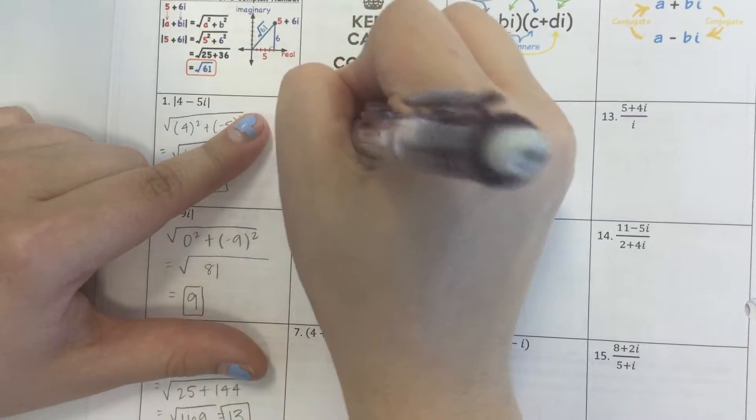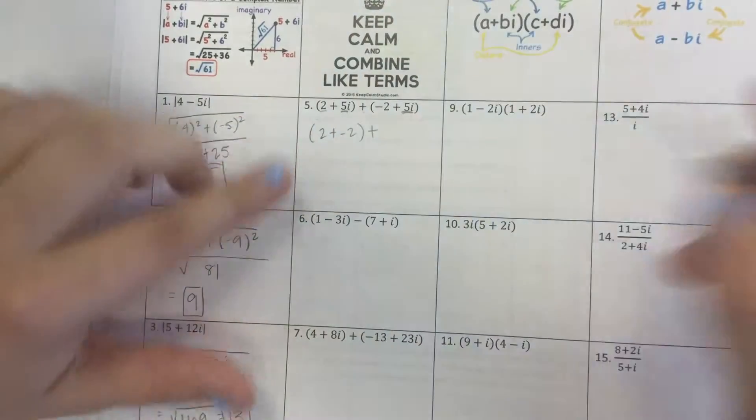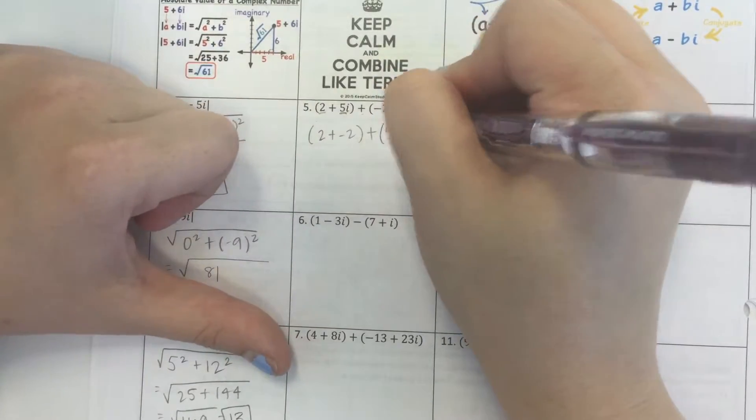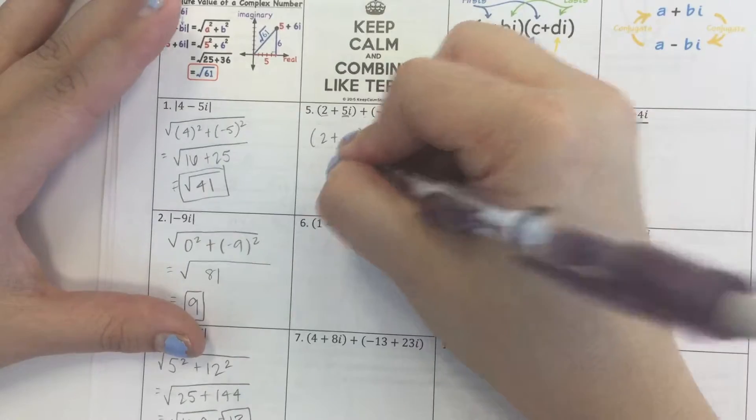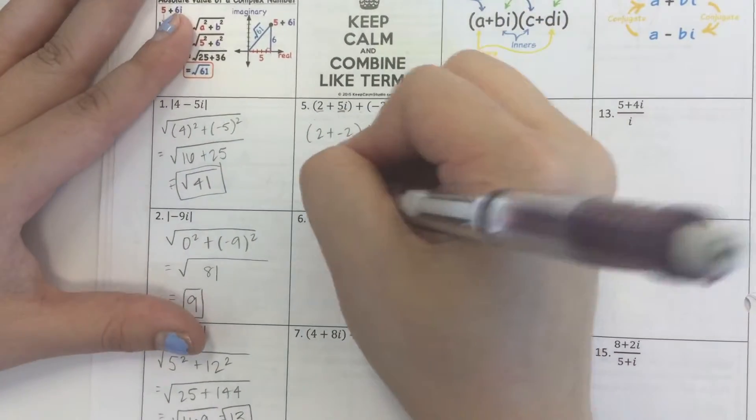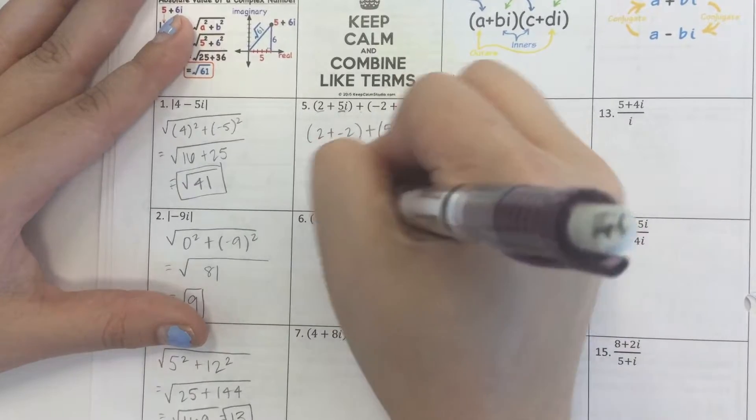So this one, 2 plus negative 2, I'm going to rewrite it like this: 2 plus negative 2 plus 5i plus 5i. Well, 2 plus negative 2 is 0. 5i and 5i make 10i. So our answer is 10i.